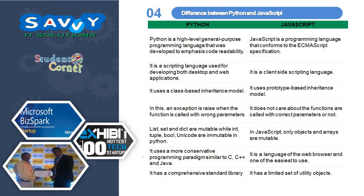The difference between Python and JavaScript: Python is a high-level general-purpose programming language developed to emphasize code readability. JavaScript is a programming language that conforms to the ECMAScript specifications — it is a scripting language used for developing both desktop and web applications. Python is a client-side scripting language that uses a class-based inheritance model, while JavaScript uses a prototype-based inheritance model. In Python, an exception is raised when a function is called with wrong parameters, whereas JavaScript does not care whether functions are called with correct parameters or not. In Python, list, set and dictionary are mutable while int, tuple,